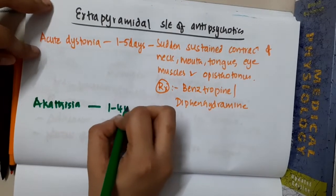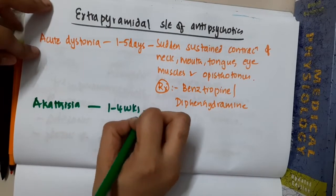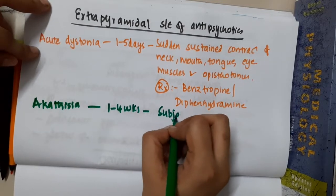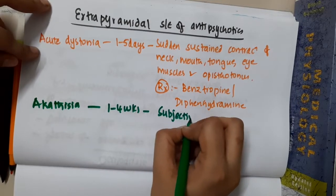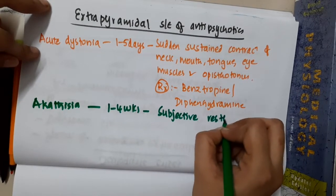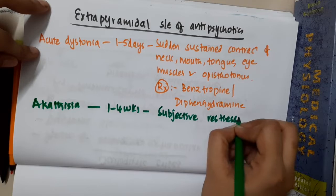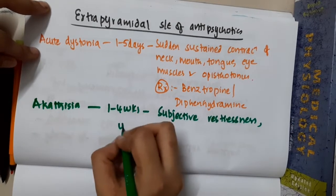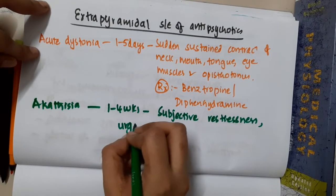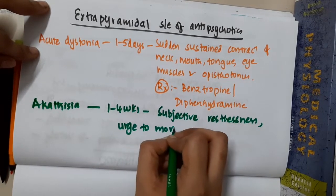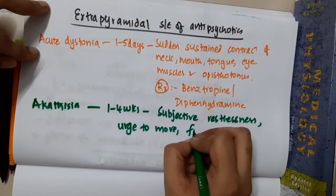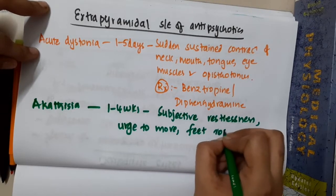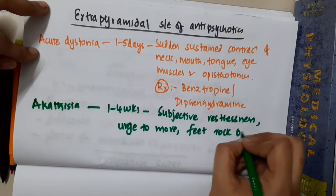Next we have akathisia. Akathisia occurs within one to four weeks. It is characterized by subjective restlessness and an urge to move — the patient rocks back and forth or moves their feet.